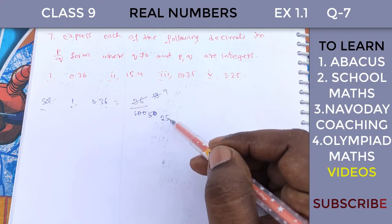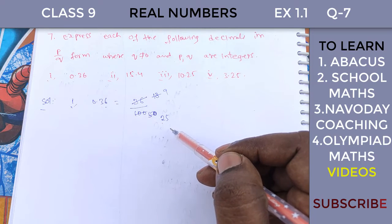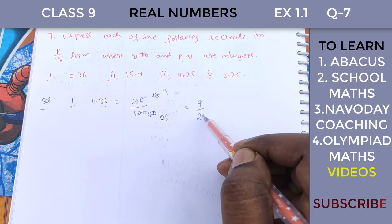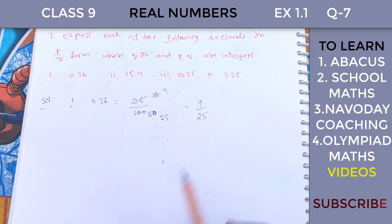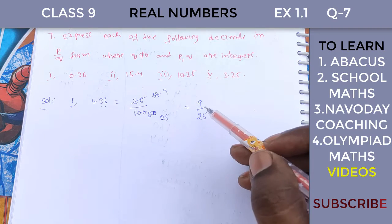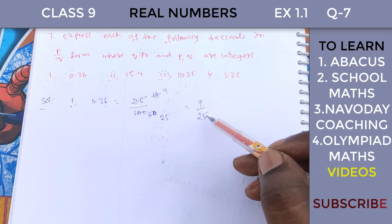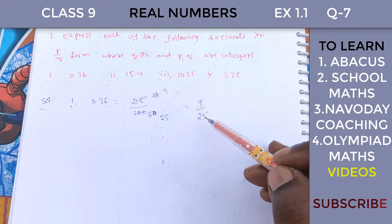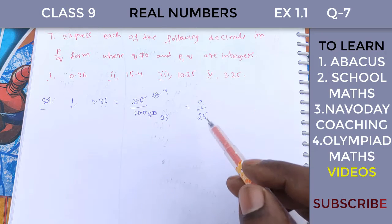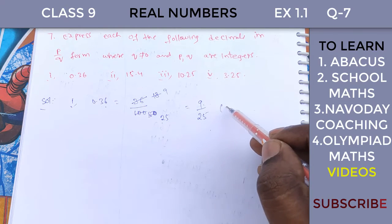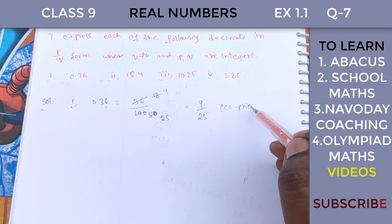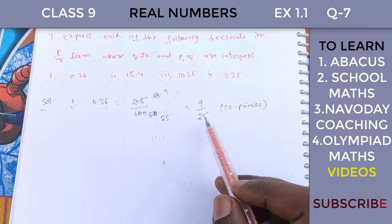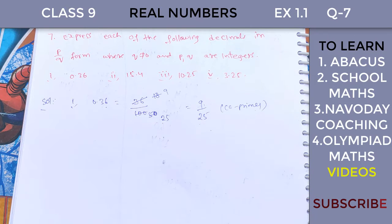If you try to divide both by 2 again, you can't. So 9 by 25 is the rational number in simplified form. These are co-primes. When two numbers are not divisible by any other common number, they are called co-primes.